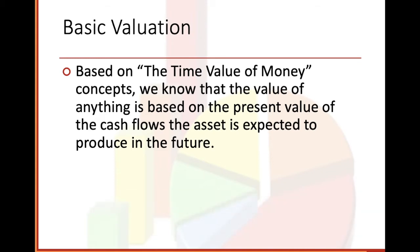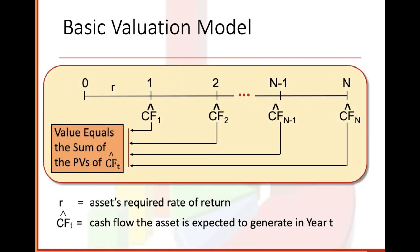Basic valuation model — we've seen this timeline before. Here we have year zero, first year, second year, and then N minus one, your number of years minus one. Value equals the sum of the present value of future cash flows. And don't forget N is the number of years or time periods.